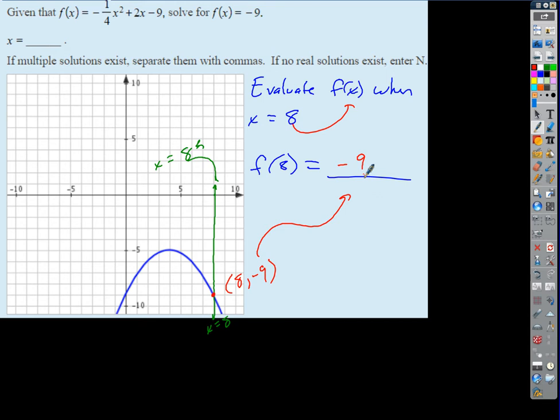Now, the question actually asks something a little bit different, doesn't it? It says given that f of x equals this function, solve for f of x equals negative 9. So it's doing kind of the opposite in a way. It's saying f of x is a fancy name for y. So it's saying y equals negative 9. What are we trying to find then, probably? X.